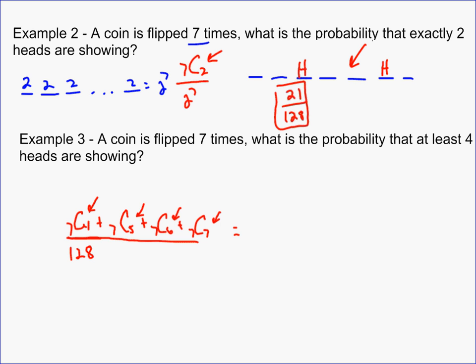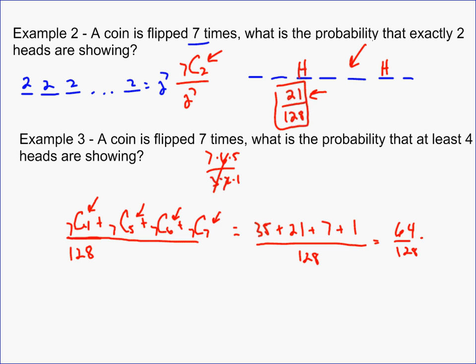7 choose 4 equals 7 choose 3, which is 35. 7 choose 5 equals 7 choose 2, which is 21. 7 choose 6 is 7, and 7 choose 7 is 1. Adding those up: 35 plus 21 plus 7 plus 1 equals 64, all over 128. So the probability of getting at least four heads is 64 over 128, which simplifies to one half.